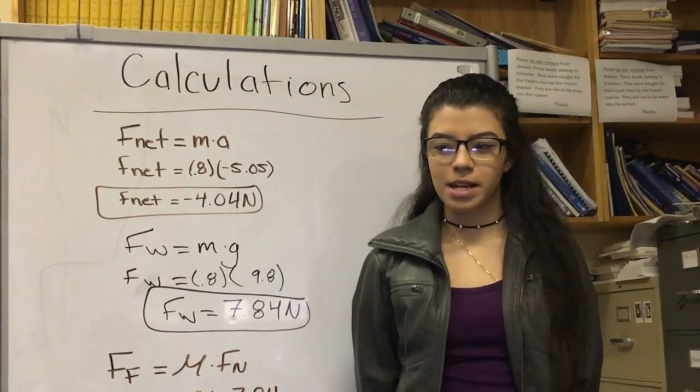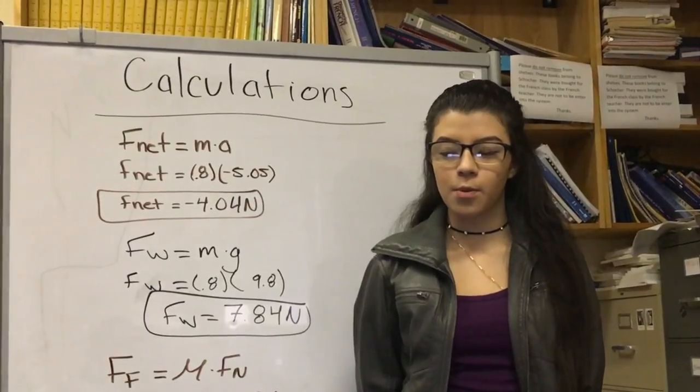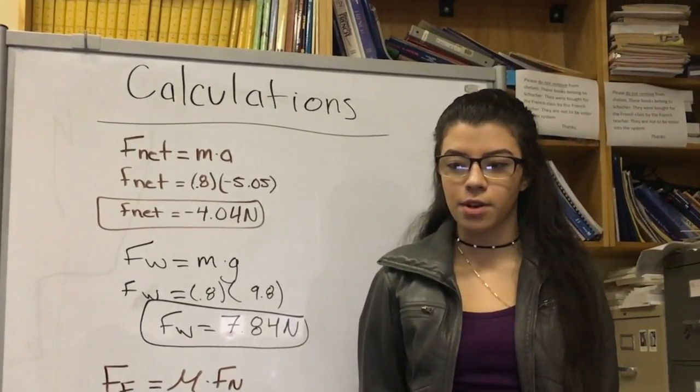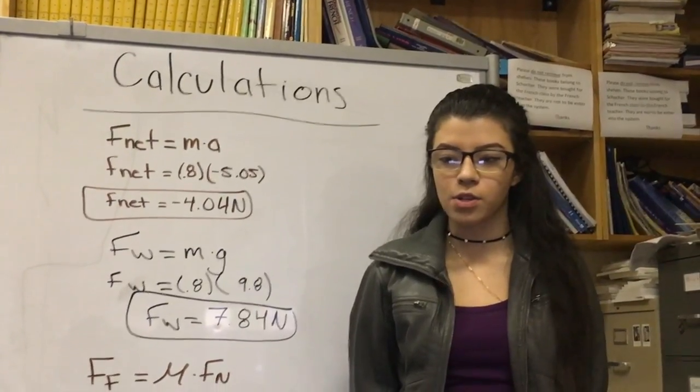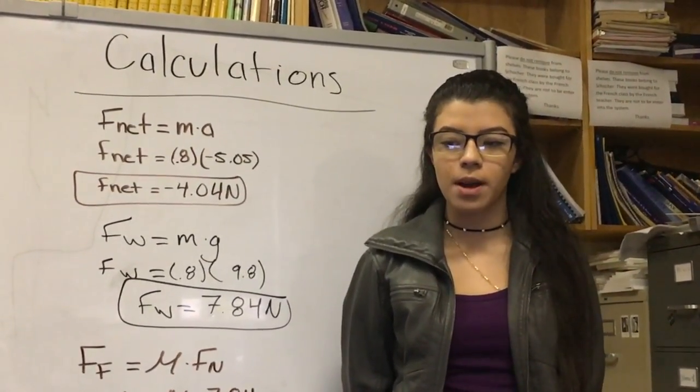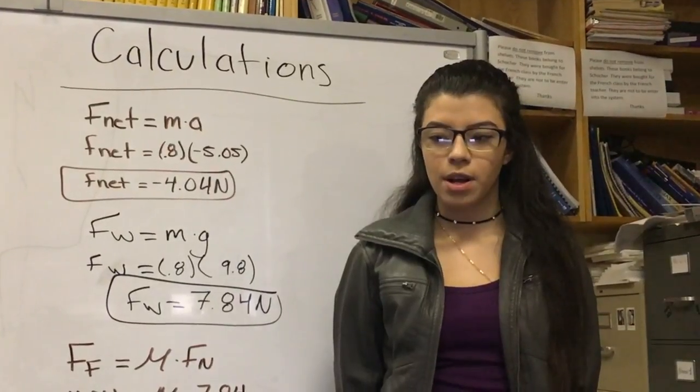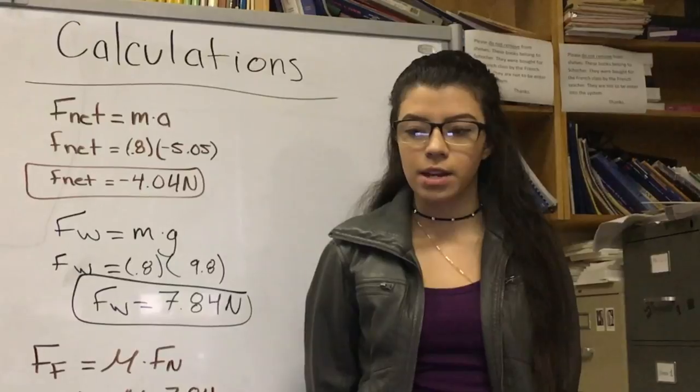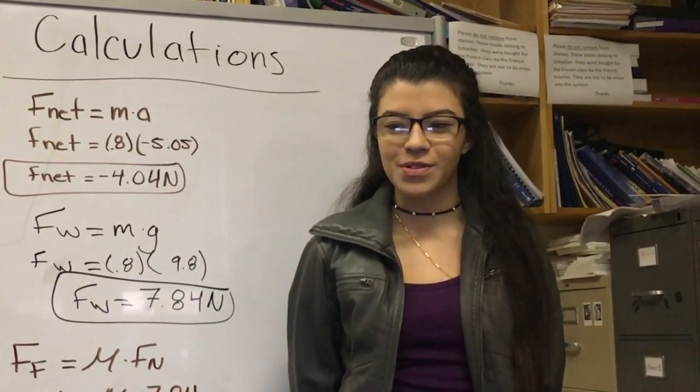The results were not surprising at all. A heavier beanbag will need more friction and more force when throwing the beanbag creates more acceleration. The mean acceleration of the beanbag for each throw was 5.05 meters per second squared. This means that the force of friction in the beanbag was about negative 4.04 newtons each time.